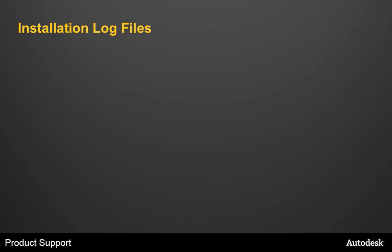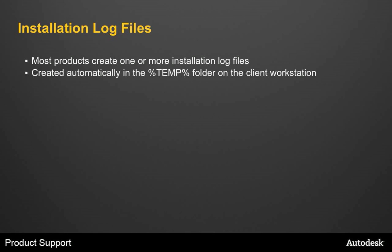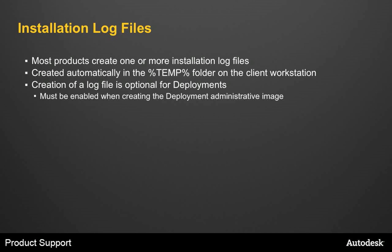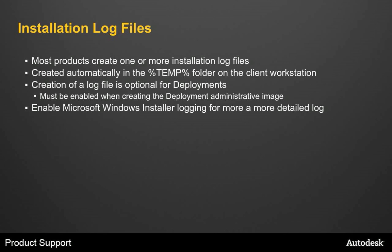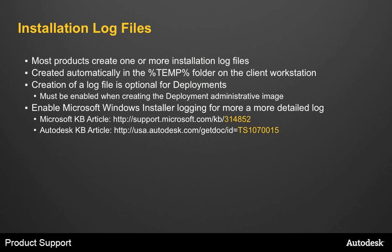A good source of information when there are problems are the installation log files. Most products create one or more installation logs, typically created in the temp folder on the client workstation. If you installed from a deployment, the creation of this log file was optional, so it needs to be enabled when creating the deployment administrative image. You can also enable Windows Installer logging to get a more detailed log file — there are details on how to do this at the Microsoft website and in our Autodesk Knowledge Base. Once enabled, these log files are created in the temp directory and are typically named msi followed by some numbers .log, providing more detailed information when the MSI installer is run.